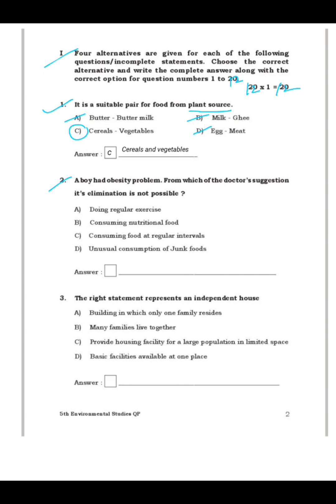Question 2: A boy has an obesity problem. From which of the doctor's suggestions is elimination of the problem not possible? Obesity means overweight. Doing regular exercise will help reduce weight. Consuming nutritional food — yes. Consuming food at regular intervals — yes. Unusual consumption of junk food — avoiding junk food helps reduce obesity. So the answer is D: unusual consumption of junk food.